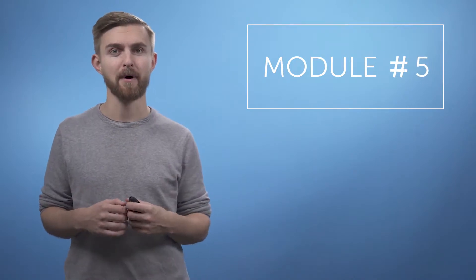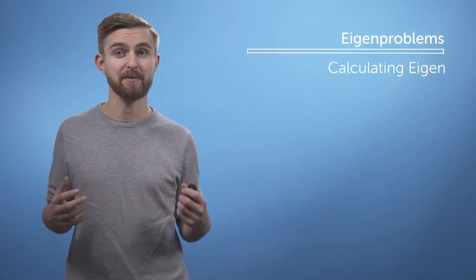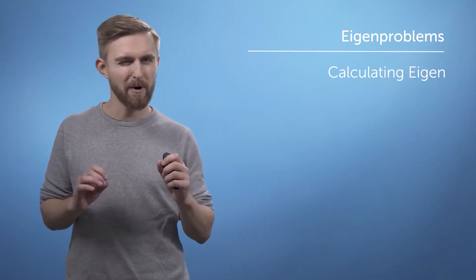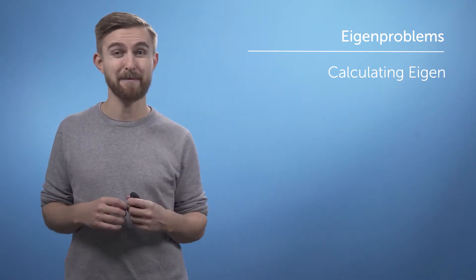So now that we know what eigenvectors are and how to calculate them, we can combine this idea with the concept of changing basis, which was covered earlier in the course. What emerges from this synthesis is a particularly powerful tool for performing efficient matrix operations, called diagonalization.